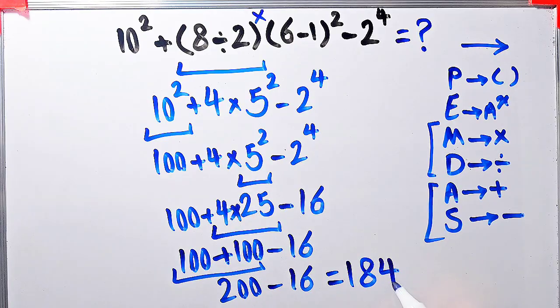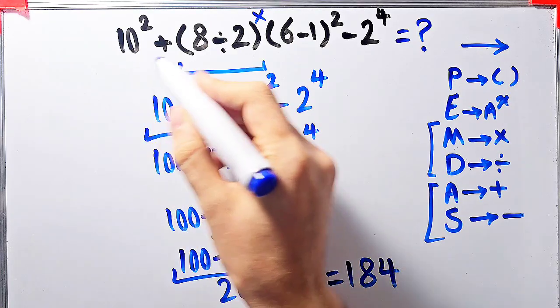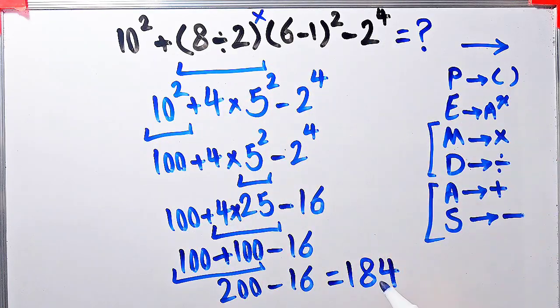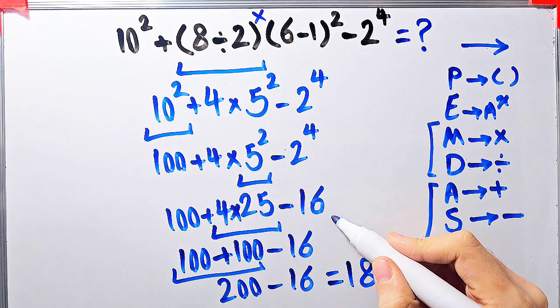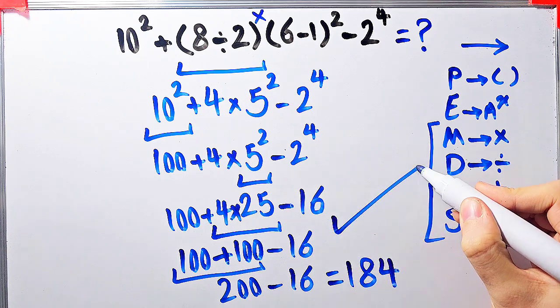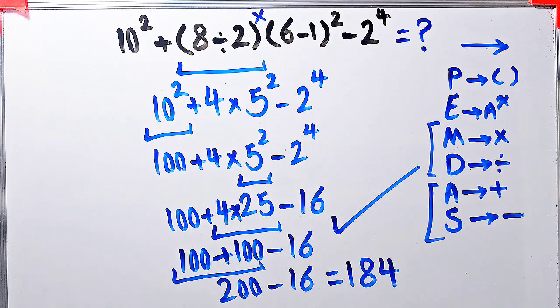200 minus 16 equals 184. The final answer of this question equals 184. Let's solve another question about PEMDAS rule.